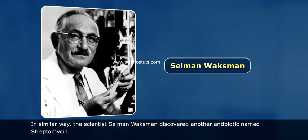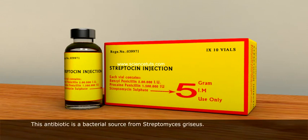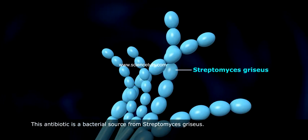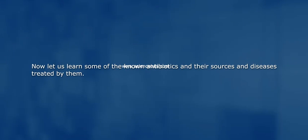In a similar way, the scientist Selman Waksman discovered another antibiotic named streptomycin. This antibiotic is derived from the bacterial source Streptomyces griseus. Now let us learn about some of the known antibiotics, their source organisms, and the diseases treated by them.